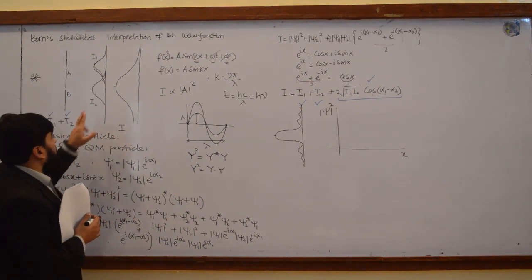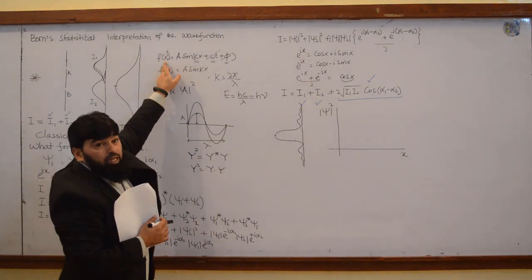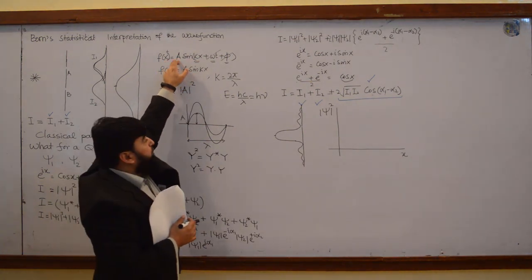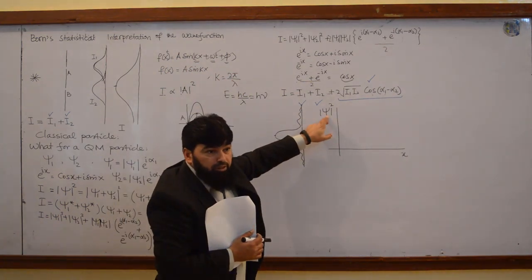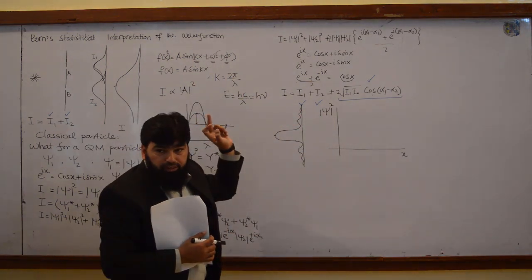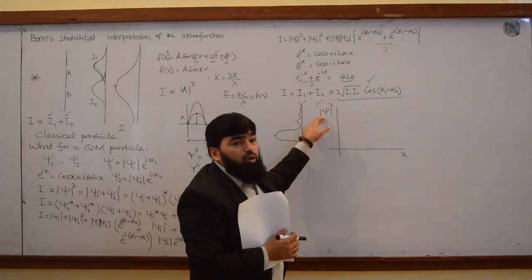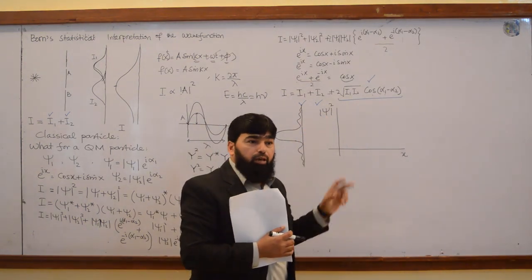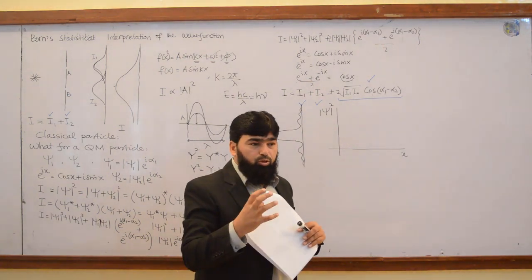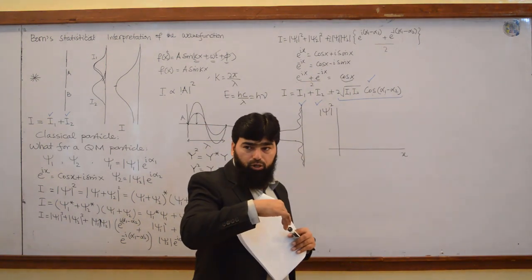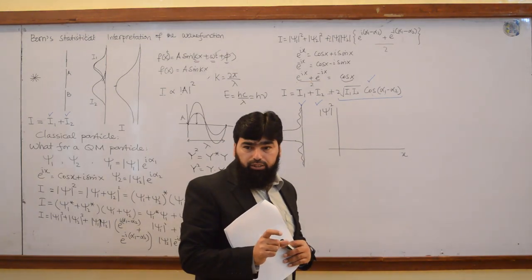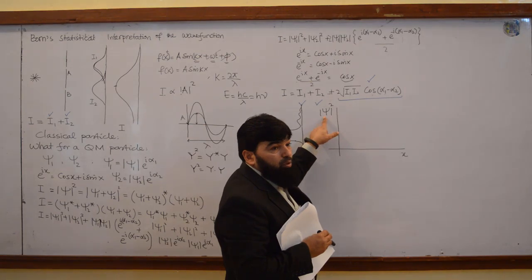Let me explain this a little bit more. Our ψ is a wave function and it has the amplitude in it. When we take the square of it, |ψ|², then |ψ|² will have the amplitude squared in it, and this |ψ|² we call the probability density. If we multiply this |ψ|² with the volume, we will get the probability. So |ψ|² is the probability density.